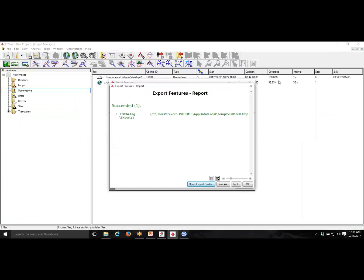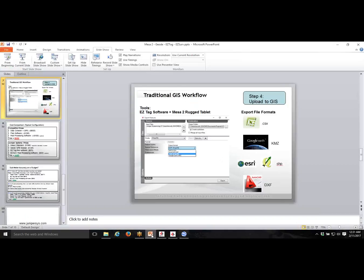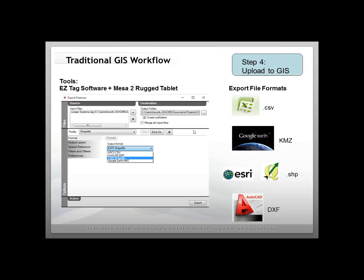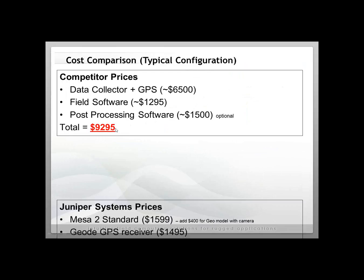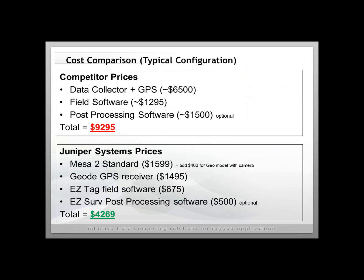That's how post-processing works. If you're interested in pricing, with a traditional GIS workflow looking at sub-meter accuracy, sometimes you have to pay for survey-type equipment which can be quite expensive for both hardware and software, with possible subscription fees. With this solution — the Mesa 2, Geode receiver, EasyTag software, and post-processing software — you're looking at potentially about $9,300, with premium hardware that can be dropped, has a long warranty, works in heat and cold, and can be submerged underwater.